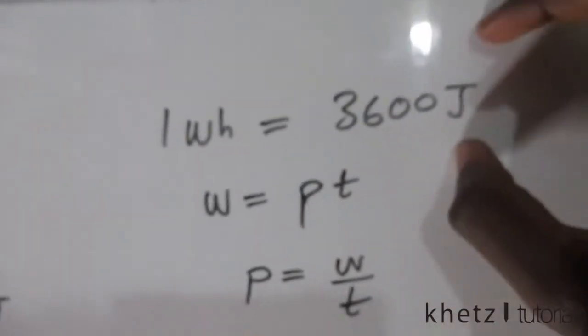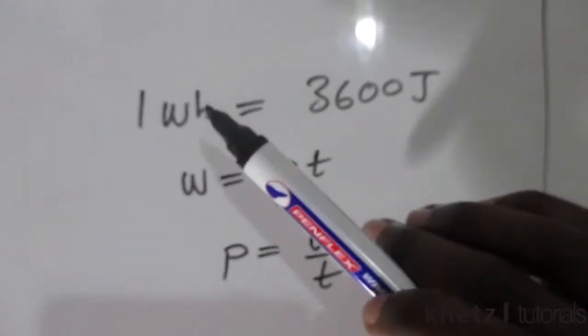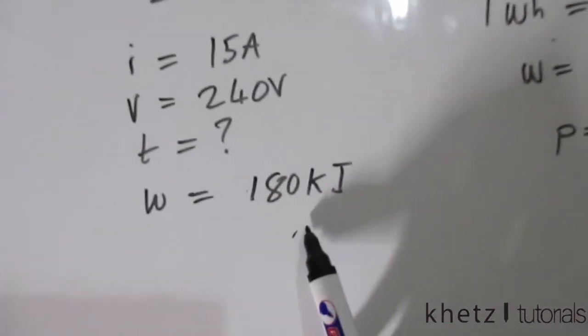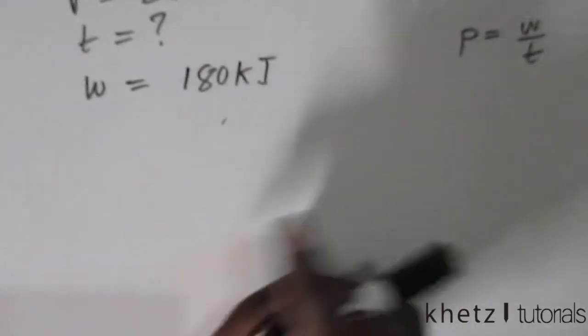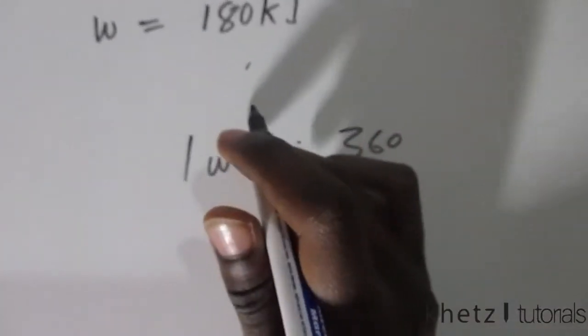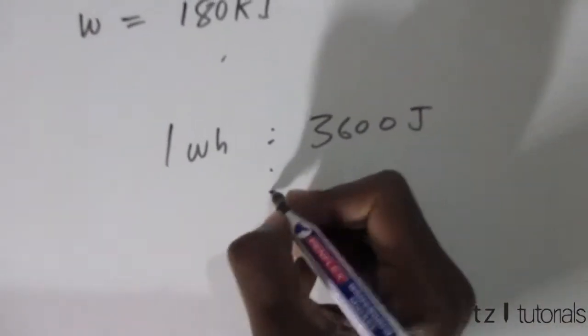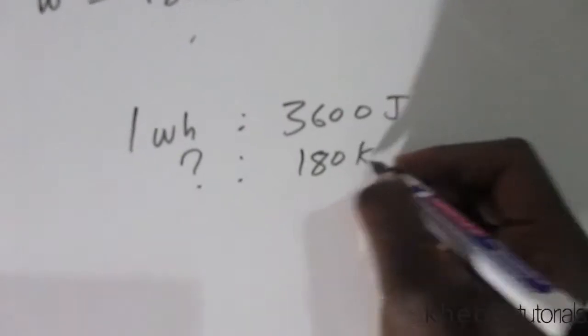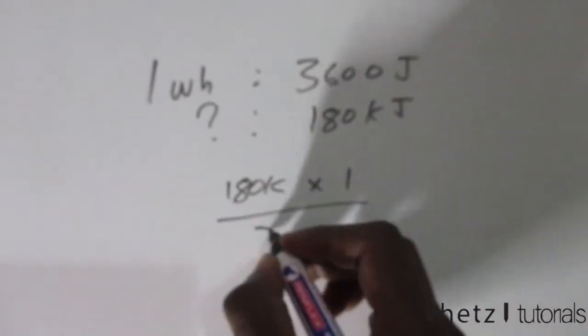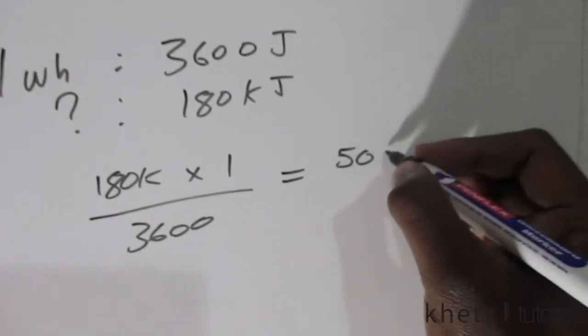Now using this conversion here we can find the watt hours which are equivalent to the given 180 kilojoules. So we just basically do proportion. If one watt hour is to 3600 joules, then what is 180 kilojoules to? Basically multiply the 180k times one divided by that, which gives 50 watt hours.